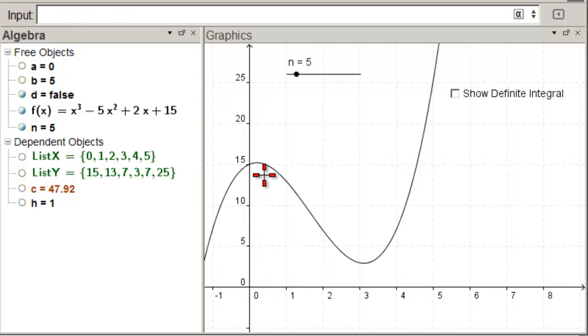The function value at 0 is 15. At 1, it's 13. Let's see here. At 3, it's about, what does it look like? About 2 or 3? There it is. It's 3. So, that's good.